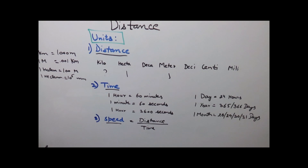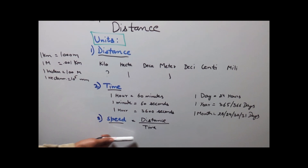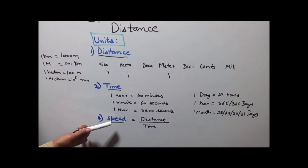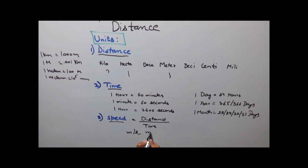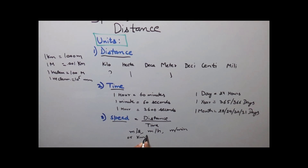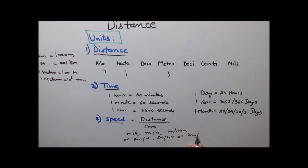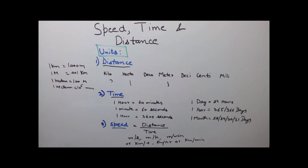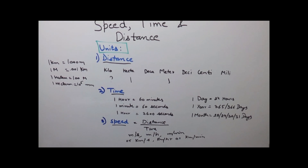Now for speed, the formula for calculating speed is distance divided by time. We have seen that distance equals speed into time, which gives us that speed equals distance divided by time. Speed can be measured in meter per second, meter per hour, meter per minute, kilometer per second, kilometer per hour, or kilometer per minute. Thus the unit of speed is a combination of different units of distance and time.